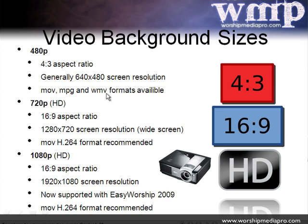All the formats are available and popular in the 480p world: MOV, MPEG, and WMV. 720p is your widescreen 16:9 aspect ratio and the screen resolution is 1280x720. For 720p and 1080p, we recommend MOV H.264 encoding for compression because that maintains the highest quality for your video backgrounds over MPEG or WMV. We actually provide only the H.264 format for 720p and 1080p.